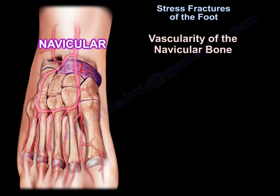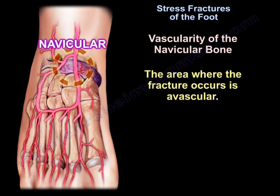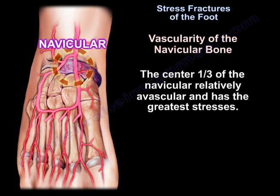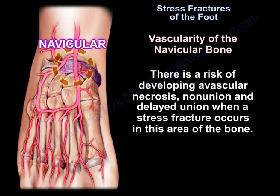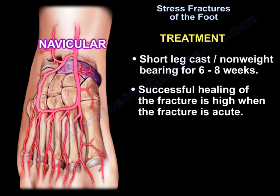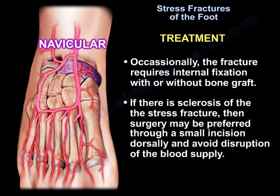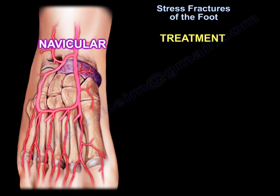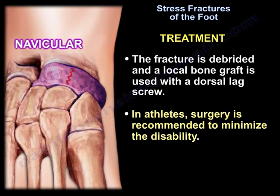The area where the fracture occurs is avascular. The central third of the navicular is relatively avascular and has the greatest stresses, creating a risk of developing avascular necrosis, non-union, and delayed union. Treatment involves a short leg cast with non-weight bearing for six to eight weeks. Successful healing is high when the fracture is acute. Occasionally, the fracture requires internal fixation with or without bone graft. If there is sclerosis of the stress fracture, surgery may be preferred through a small dorsal incision, avoiding disruption of the blood supply. The fracture is drilled and a local bone graft is used with a dorsal lag screw.